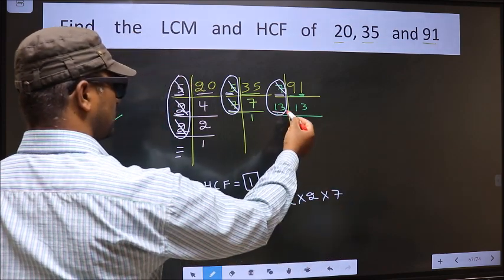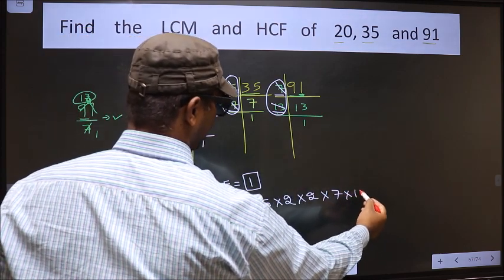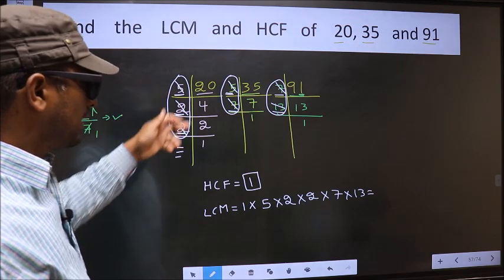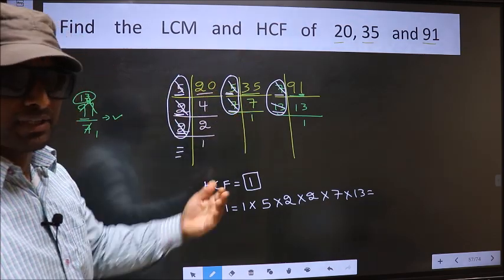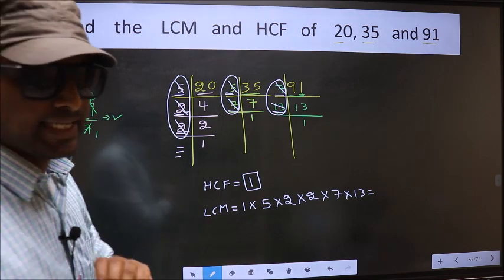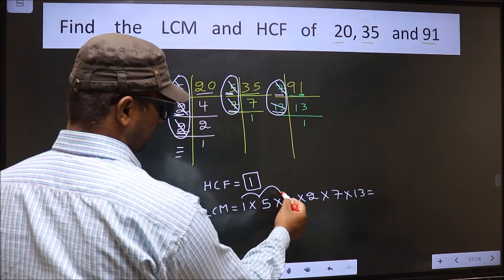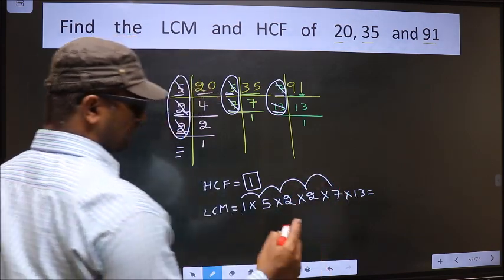Now 13 is not cut. 13 is present in only one place, so you cut 13 and write here. Now each number has been cut. Therefore, our LCM is 1 into 5, 5 into 2 is 10, 10 into 2 is 20, 20 into 7 is 140.